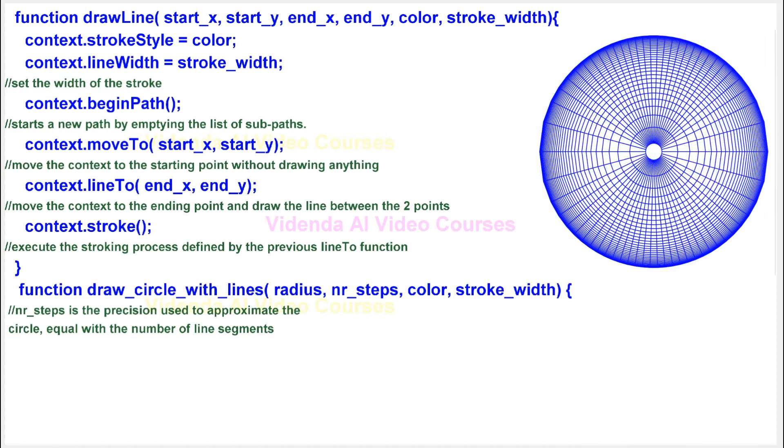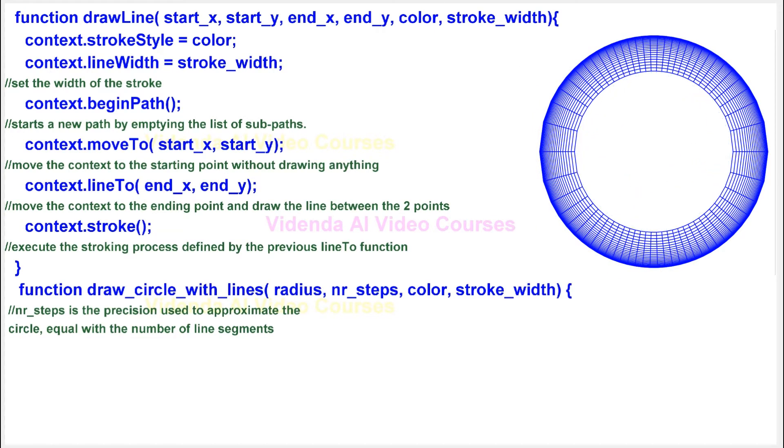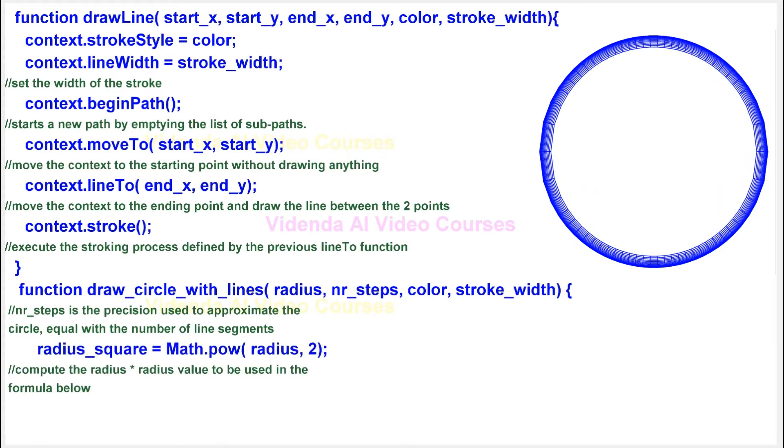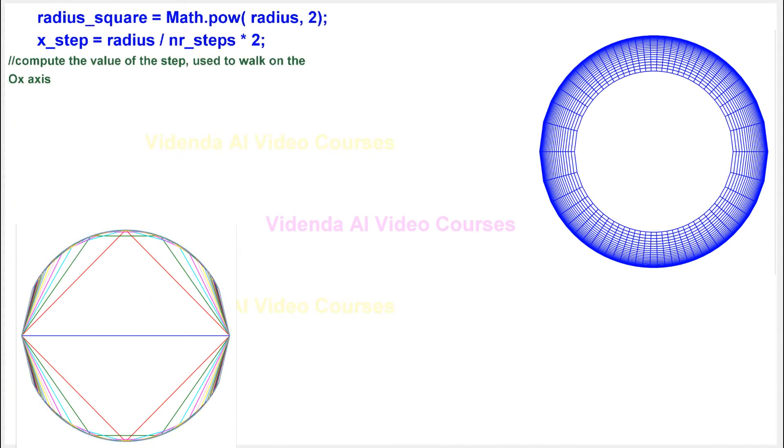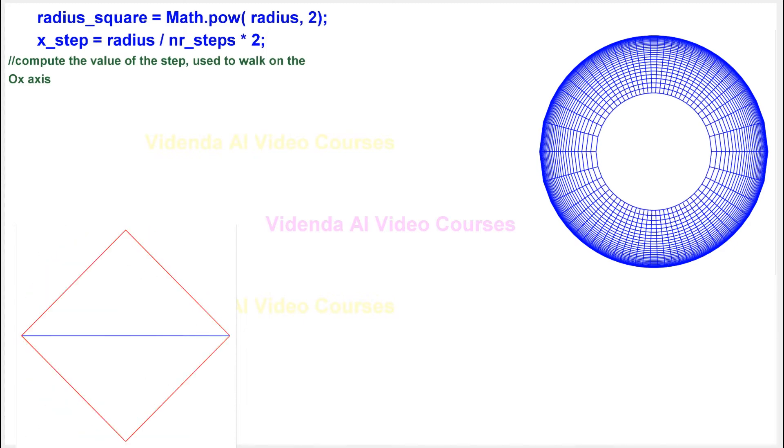nr_steps is the precision used to approximate the circle, equal with the number of line segments. Compute the radius asterisk radius value to be used in the formula below. Compute the value of the step, used to walk on the x axis.